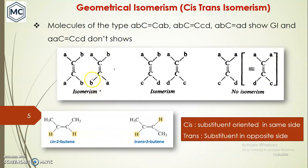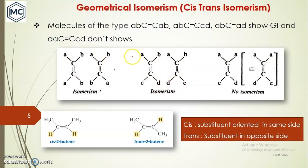It is also called cis-trans isomerism. For a molecule of the type ab-C=C-ab, the first carbon has substituents a and b, and the second carbon also has a and b — different types of atoms on the same carbon — and it shows geometrical isomerism. Another type is ab-C=C-cd, where one carbon has a and b and the other has c and d; this can also show geometrical isomerism. But a compound of the type aa-C=C-cd does not show geometrical isomerism because there are two identical atoms on one carbon.